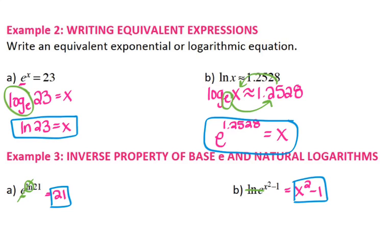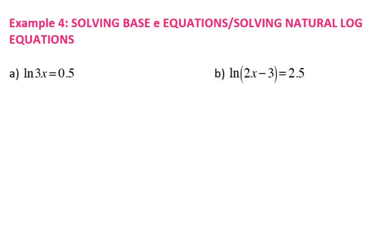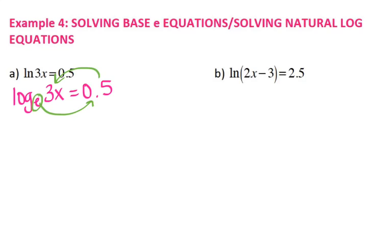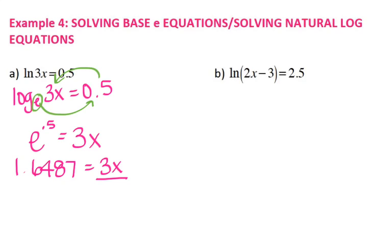The inverse property is very important once we get to solving equations. So the first two scenarios: I have a natural log and they equal a number. When a logarithm equals a number, you want to change it to exponential form. So this is a log base e of 3x equals 0.5. Starting with my base, swing across, there's my exponent, swing back across. So I have e to the 0.5 equals 3x. e to the 0.5 evaluates to 1.6487 equals 3x. Divide both sides by 3 and you get x equals 1.6487 divided by 3, which gives you 0.5496.